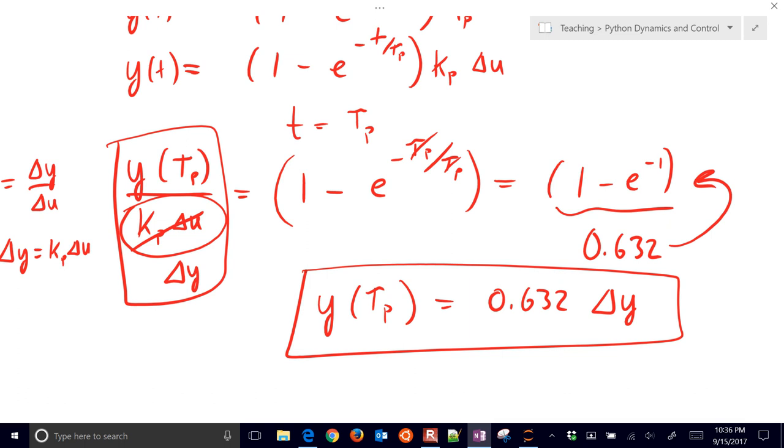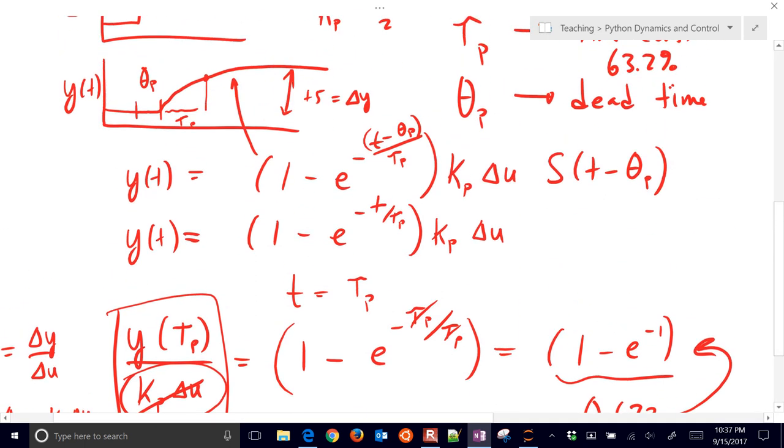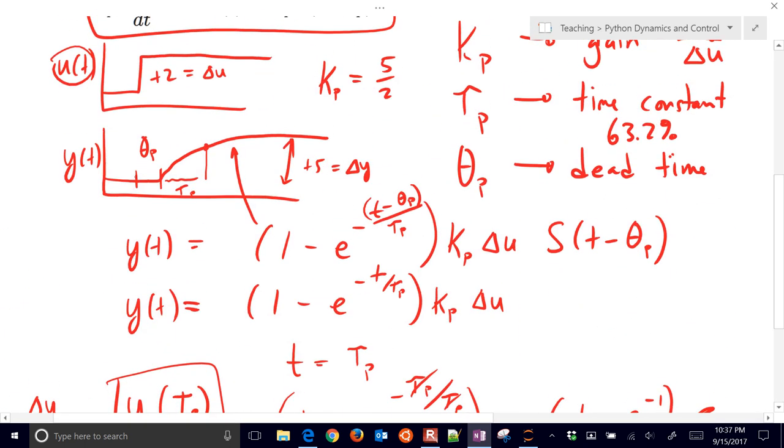If you have a dead time, all that you do is just shift this to the right. So without the dead time, it would look like that. And every point, I just shift all of that response over.